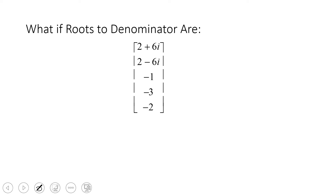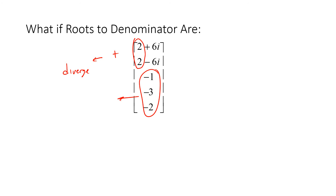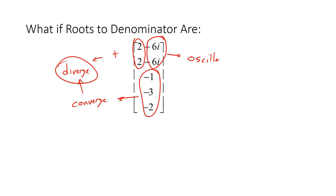What if the roots of the denominator include a positive real part? Even one positive real root causes divergence. To review: all negative real parts means converge, but converge plus diverge still equals diverge overall. And even one root with an imaginary part means the system oscillates. So for this system it will both oscillate and diverge.